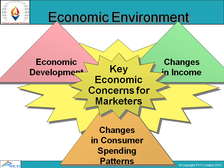Now, the economic environment includes three things. First, economic development — what is the level of your economy: developing, developed, or underdeveloped. This determines income and purchasing power. For example, in America — a developed economy — the standard of living is high and purchasing power is higher. In India, a developing economy, purchasing power is comparatively lower in many areas.